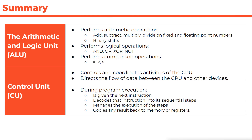There are two major component parts inside the CPU. The first is the arithmetic logic unit, also known as the ALU. It performs all arithmetic operations — addition, subtraction, multiplication, division — on fixed numbers and floating point numbers. It also performs logical operations: AND, OR, exclusive OR, and NOT gates. In addition, it performs comparison operations, which are important in selection statements that determine whether something is true or false.